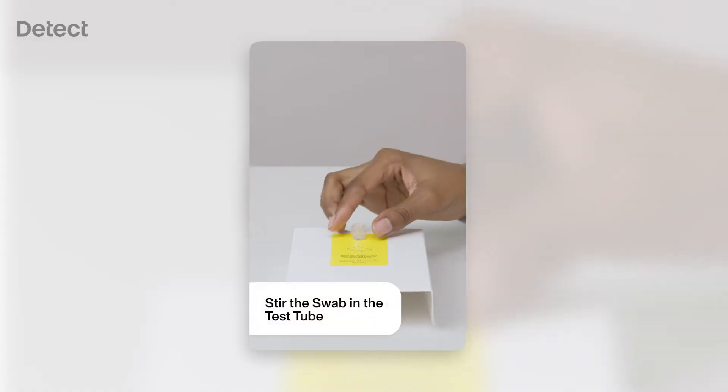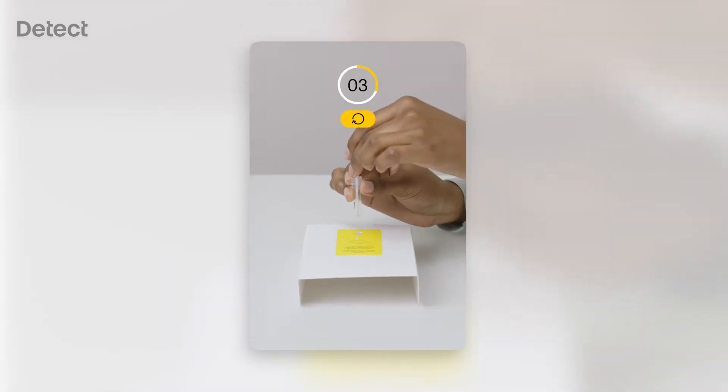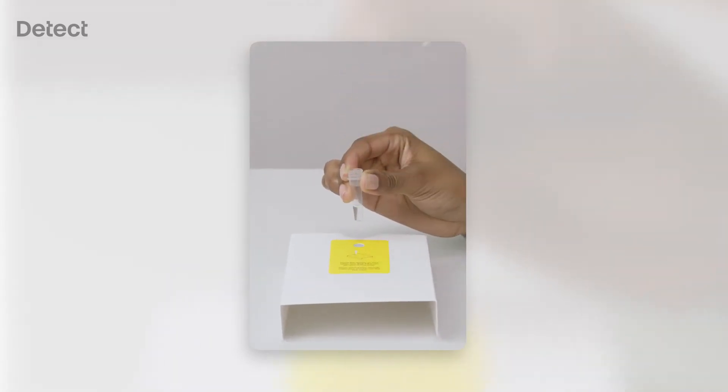Insert the swab into the test tube, making sure the soft tip is fully submerged in liquid. Hold the test tube to keep it steady and vigorously stir the swab for 15 seconds. Discard the swab when you're done.